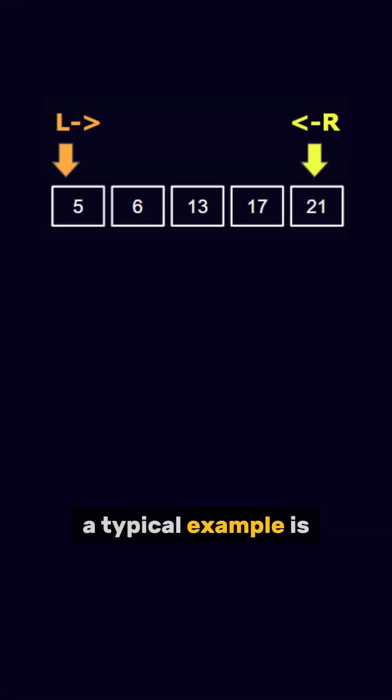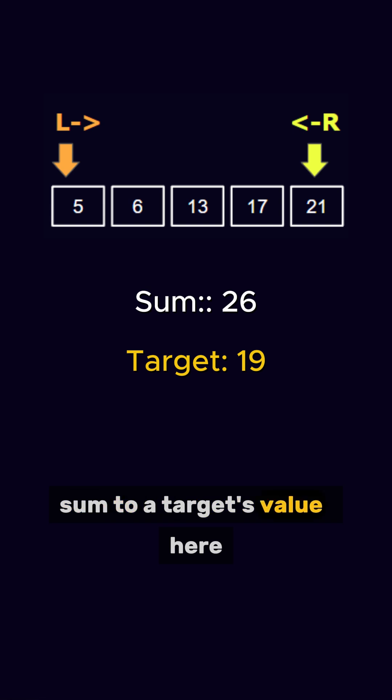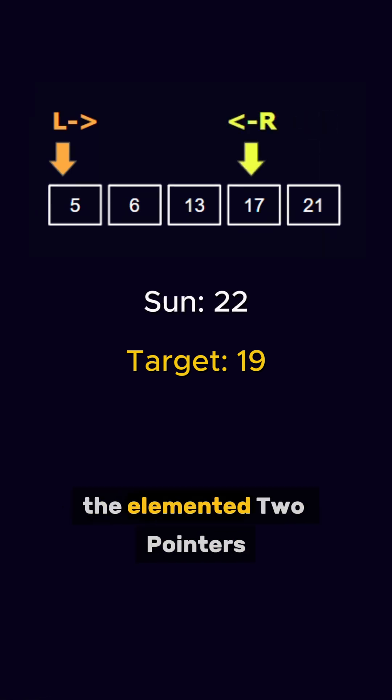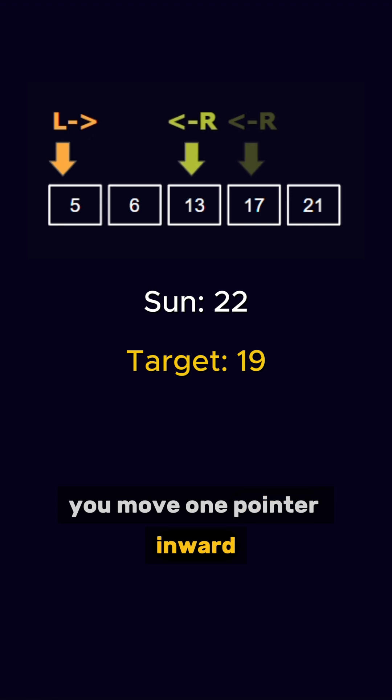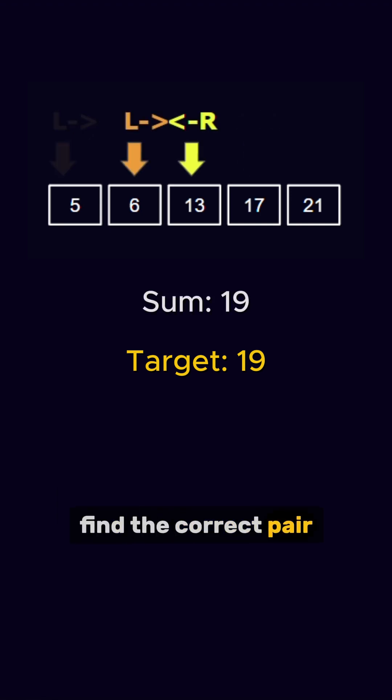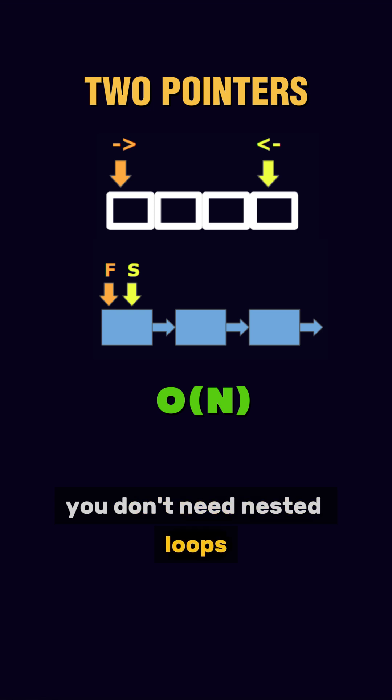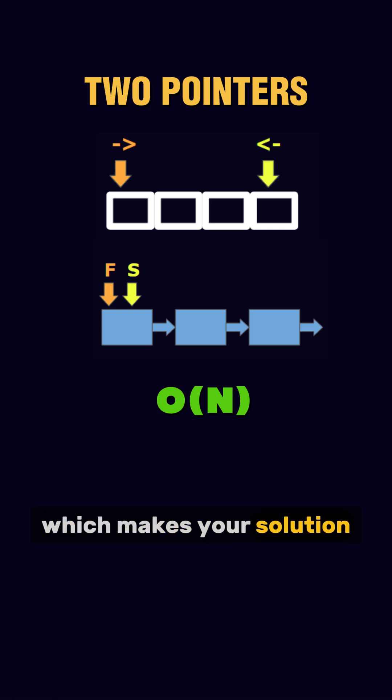A typical example is finding two numbers in a sorted array that sum to a target value. Here, one pointer starts at the beginning and the other at the end. Based on the sum of the elements at the pointers, you move one pointer inward to quickly find the correct pair. Using this technique means you don't need nested loops, which makes your solution much faster than a brute force method.